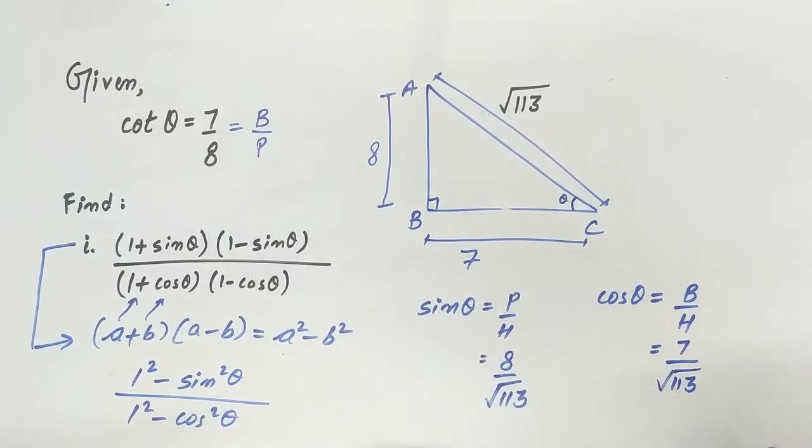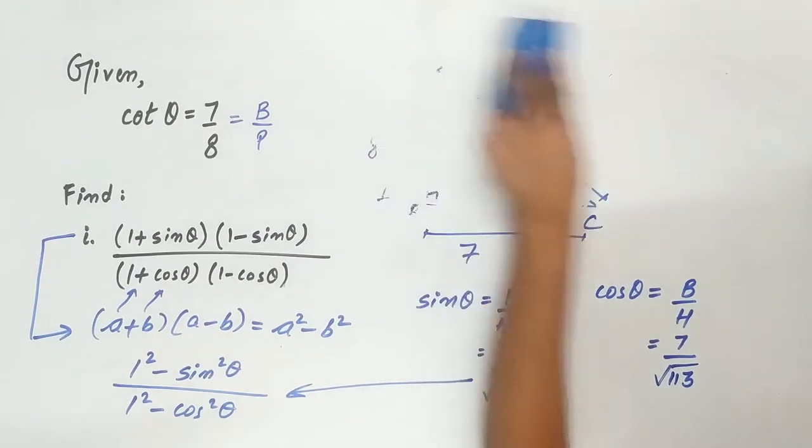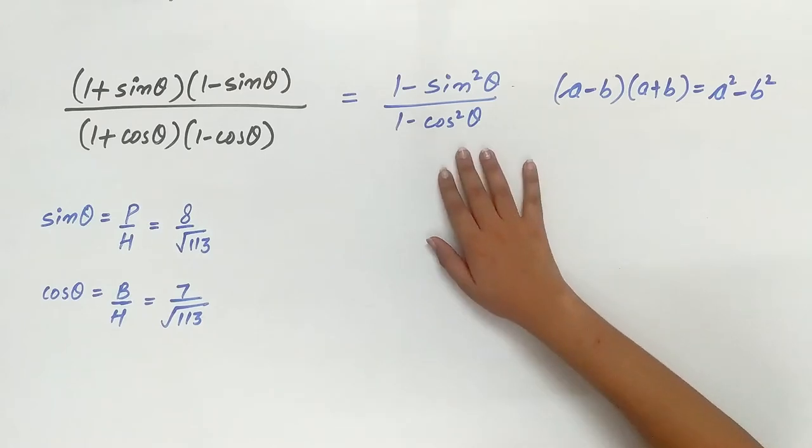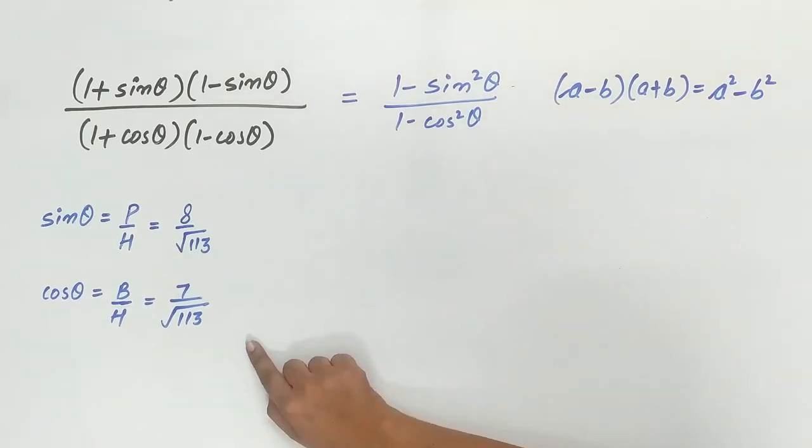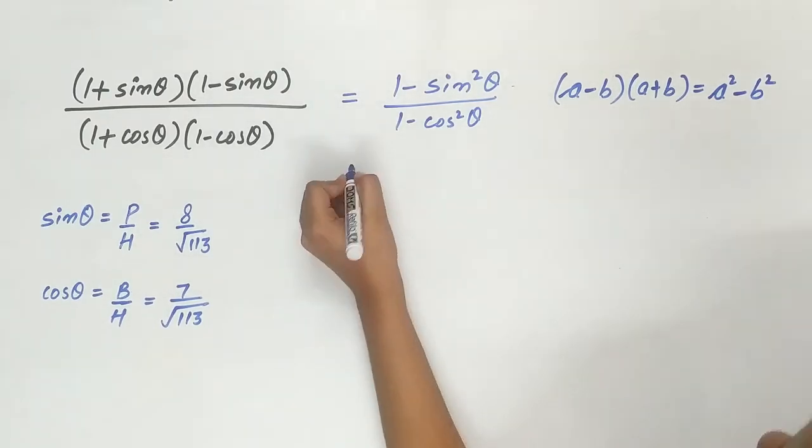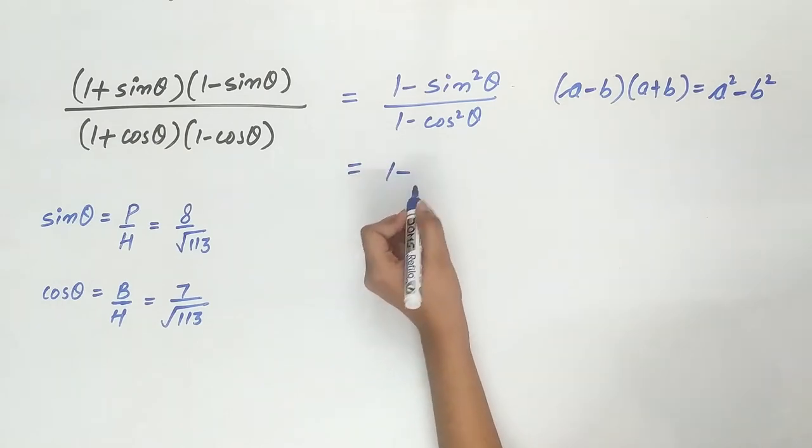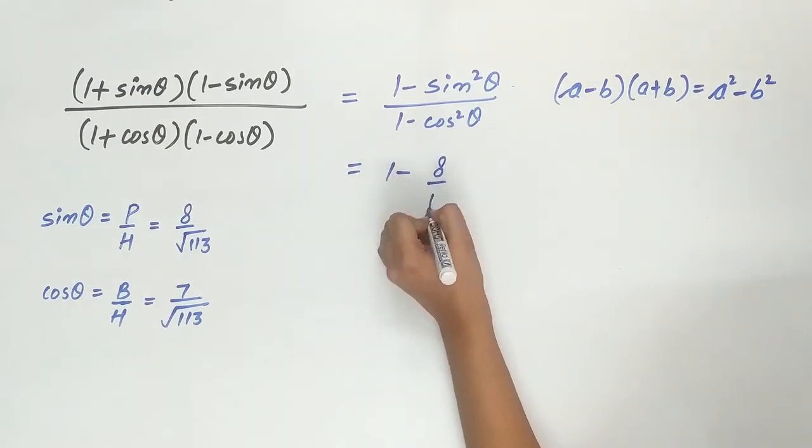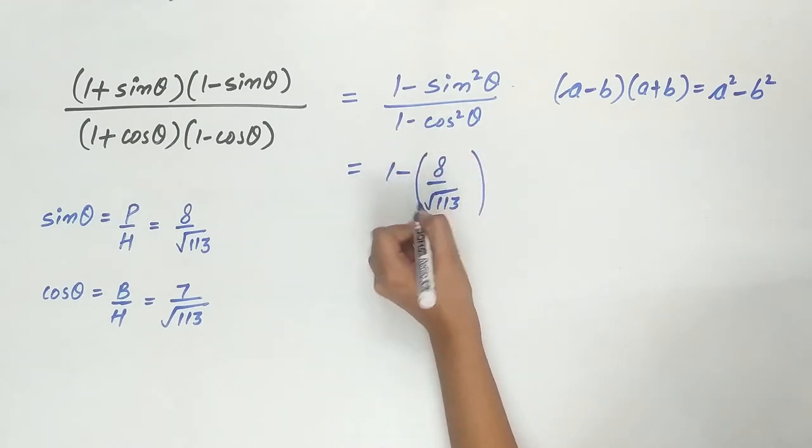So, let's substitute these values in the expression. We have simplified the expression and know the values of sin cos theta. So, let's substitute it. 1 minus 8 by square root of 113 whole square.